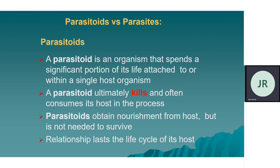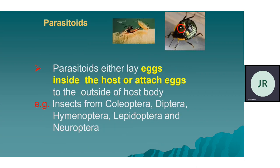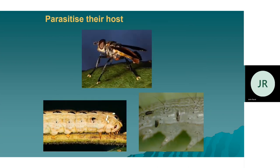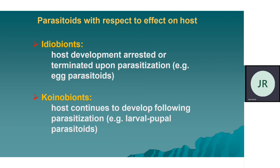Parasitoids kill and obtain nourishment from the host, but the host is not needed to survive. An example: you can see in this picture that the wasp is parasitizing — it's laying its eggs onto the body. In another picture, it is inserting eggs inside the body. In this diagram, you can see how it inserts its ovipositor and with a barbed ovipositor transfers its egg. Now it is in the body of the caterpillar — it grows inside and eventually the caterpillar dies. Parasitoids have a very narrow host range.